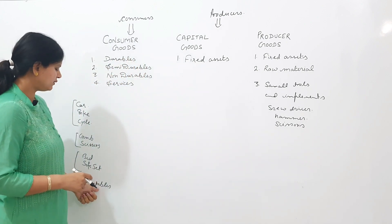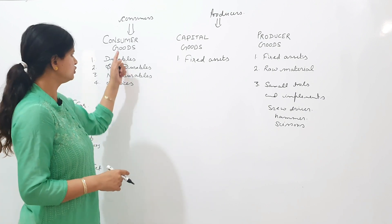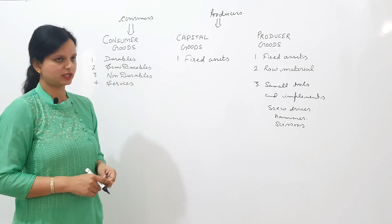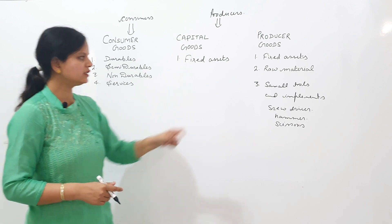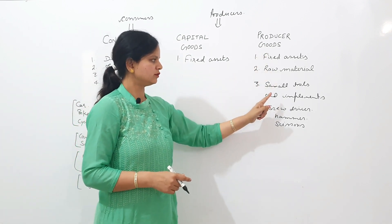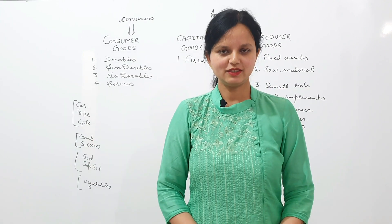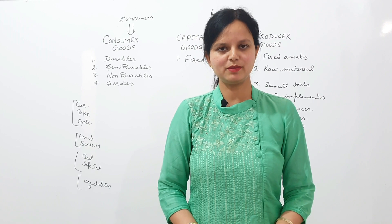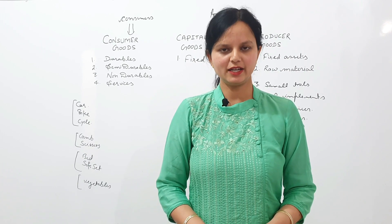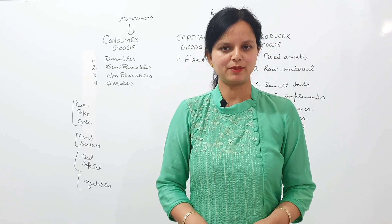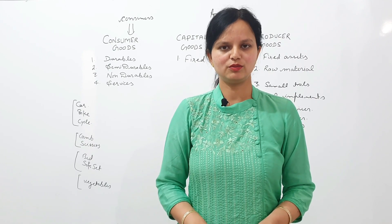Last example: vegetables. If vegetables are purchased by a consumer, then it is a consumer good. And if vegetables are purchased by a business unit like a restaurant, then vegetables will be deemed as a producer good — included in raw material. So dear students, we derive the concept that the same good may be a capital good, consumer good, or producer good. It depends on the end user, and the end users are consumers and producers.